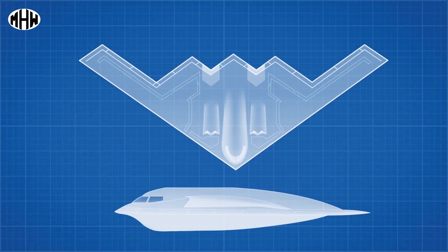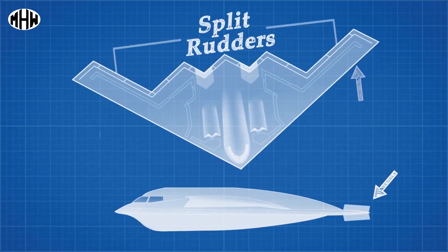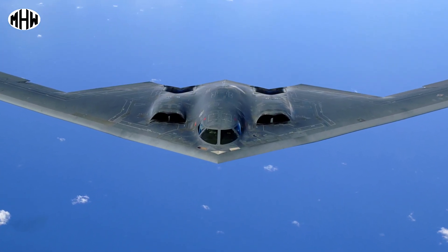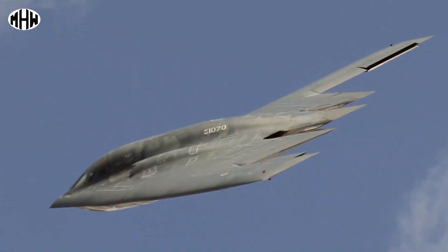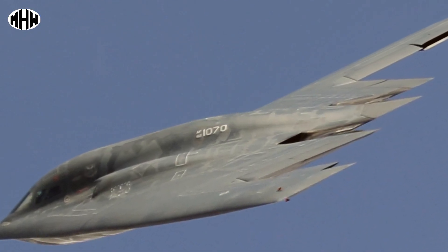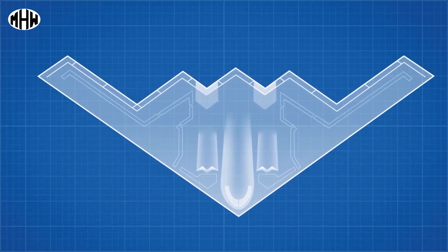One of the most notable characteristics of the flying wing is the lack of a tail to control yaw. The B-2 instead uses split rudders on the tips of the left and right wings, which act as air brakes to slow either side of the wing and cause yaw motion. However, when in use, the split rudders can increase the radar cross section of the plane, so the B-2 can also use differential thrust from its left and right engines for yaw control when stealth is a priority.